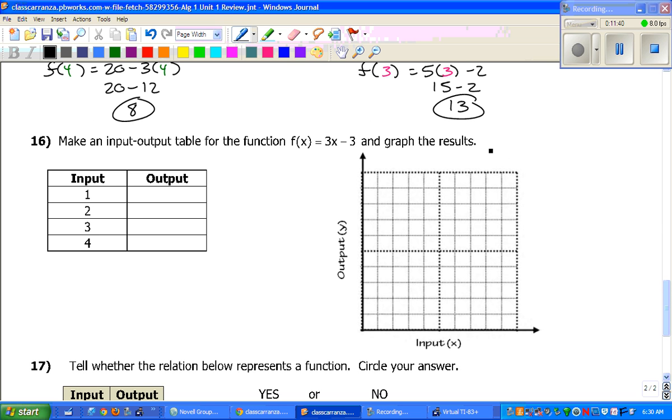Number 16, make an input-output table for the function f of x equals 3x minus 3 and graph the results. So, for each one of these, you're going to be plugging in whatever your input is. I'm going to start right away just by rewriting the equation. Plug in 1, 2, 3, and 4. 3 times 1 is 3. 3 minus 3 equals 0. 3 times 2 gives us 6. 6 minus 3 is 3. 3 times 3 is 9. 9 minus 3 gives us 6. 3 times 4 is 12. 12 minus 3 is 9.